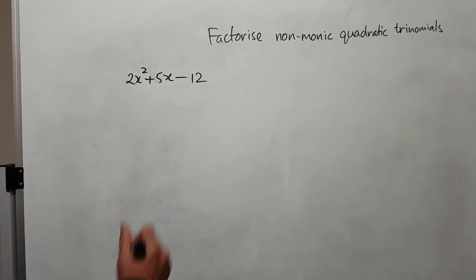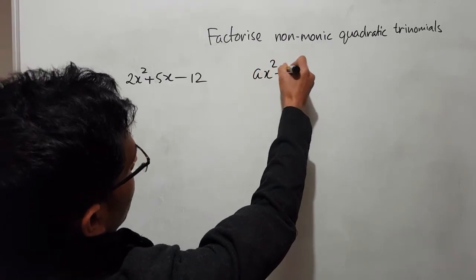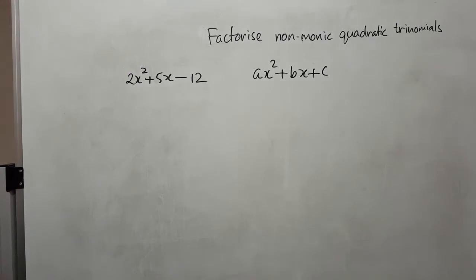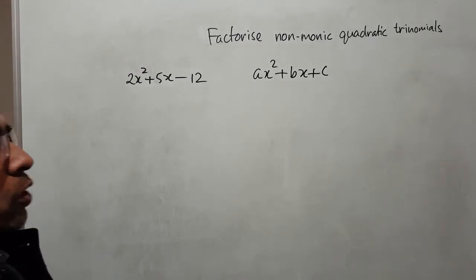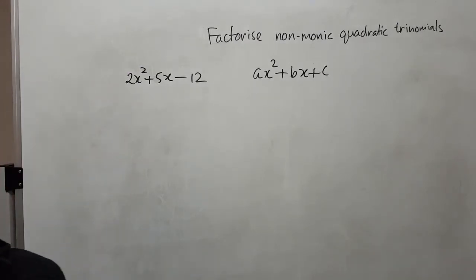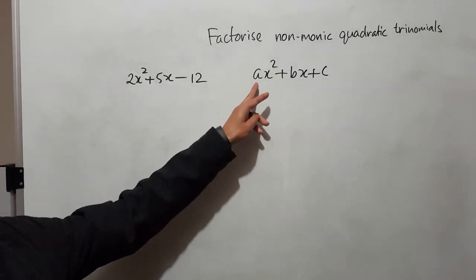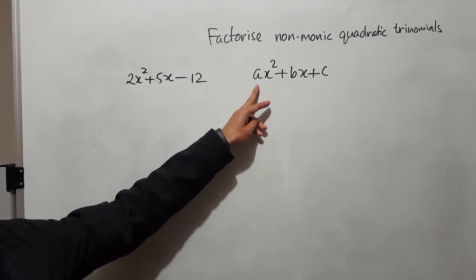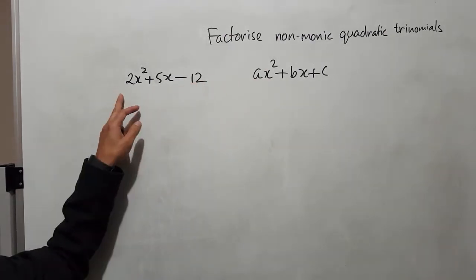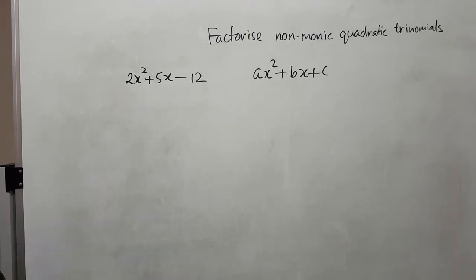The general form of the quadratic is ax squared plus bx plus c, where a is the coefficient of x squared, b is the coefficient of x, and c is the constant. So if you deal with a problem where a is 1, it is called a monic quadratic. But now we are dealing with a equal to 2, because the coefficient of x squared is 2, so we say it is non-monic.